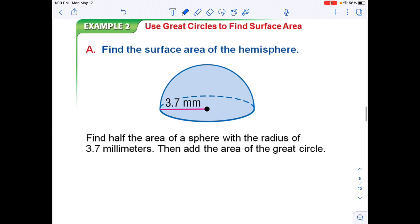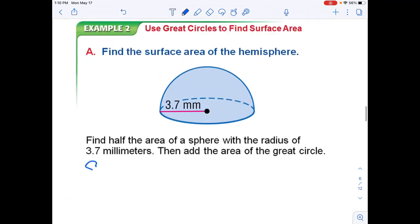Now if we have a hemisphere, we have to treat this a little differently. We know the surface area is half the surface area of a normal sphere, but now we also need to deal with this great circle. We need to add to it the area of the great circle to get the whole surface area. So half the area of a sphere with the radius of 3.7 millimeters, and then add the area of the great circle. Our equation for a sphere is 4πr². That would just be the area of the sphere, but we want half of it. Then we have to add the great circle πr².